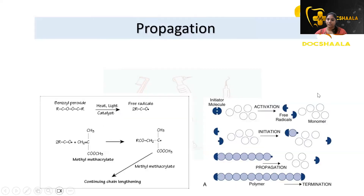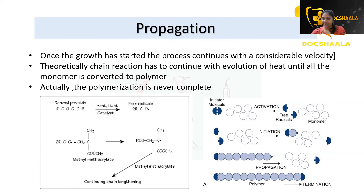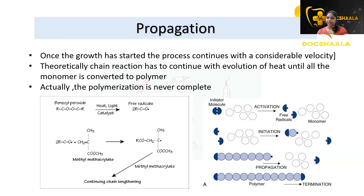Coming to the propagation stage: after initiation, propagation begins. Once the process has started, it continues with considerable velocity. This chain reaction continues with the evolution of heat until all the monomer is converted into polymer — only then is polymerization complete. The chain gets propagated, meaning multiplied, with dissipation of heat.